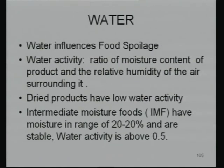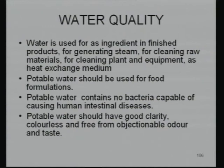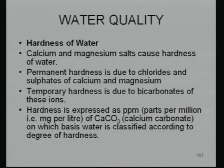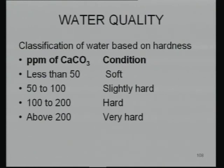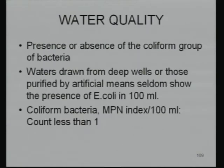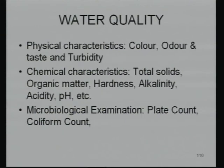Water is a major component influencing food spoilage — water activity must be kept as low as possible. Water quality also affects food processing; for example, cola drinks have faced problems with water quality. Portable water must be available for any processing. Water is classified based on ppm of calcium carbonate for hardness (temporary and permanent hardness), and coliform count must be less than one.